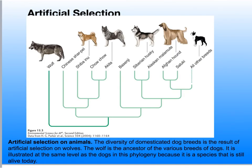Here we have a phylogenetic tree of dogs. The diversity of domesticated dog breeds is basically a result of artificial selection from wolves. The wolf ancestor created this variety of breeds of dogs from one species, and we can see it illustrated here because this species is still alive today and we can test their DNA.